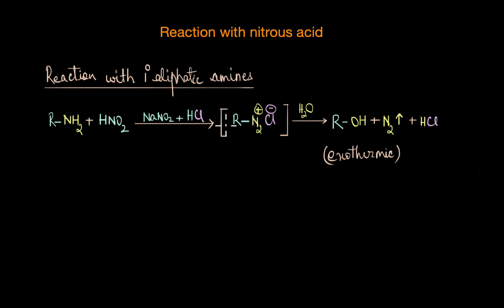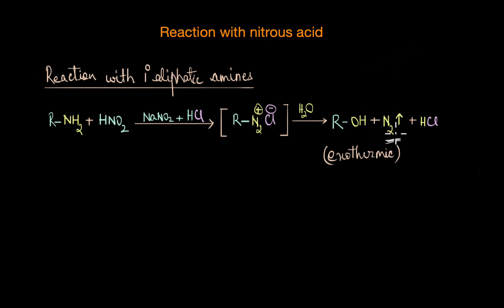Primary aliphatic amines react with nitrous acid to form an extremely unstable intermediate called the aliphatic diazonium salt. This salt is so unstable that it decomposes immediately, liberating nitrogen gas. This reaction is highly exothermic and is characterized by the rapid evolution of nitrogen gas. This vigorous effervescence of nitrogen gas is the key observable feature that distinguishes primary aliphatic amines from other types of amines.